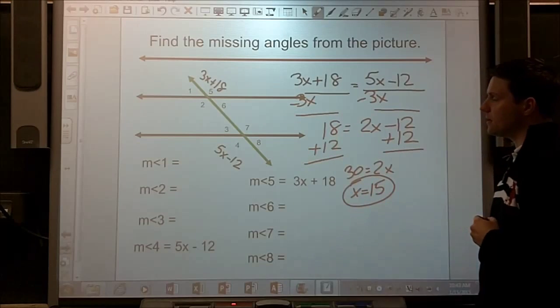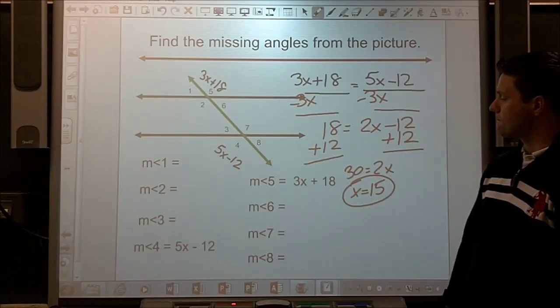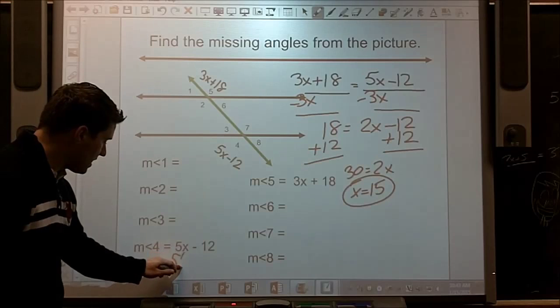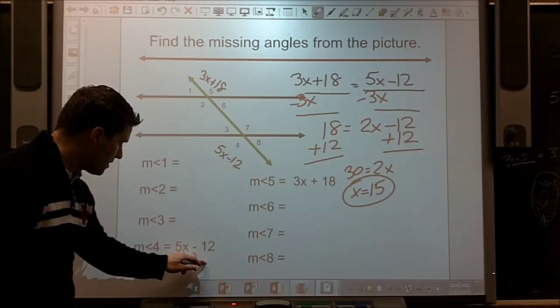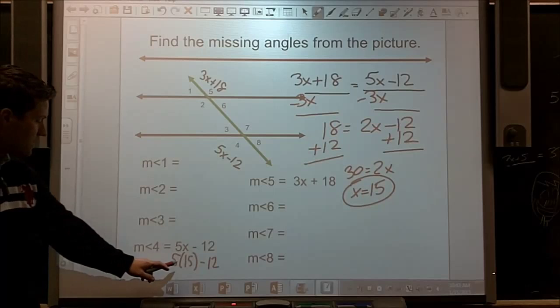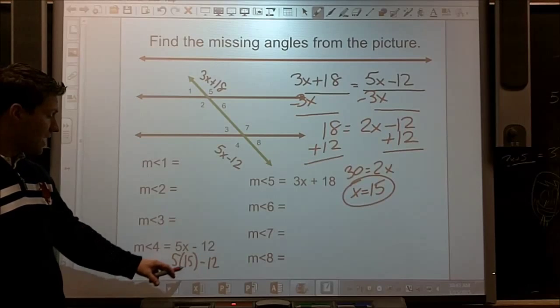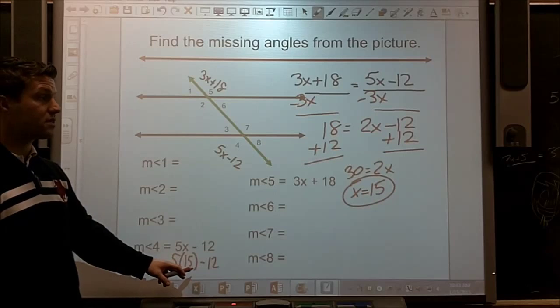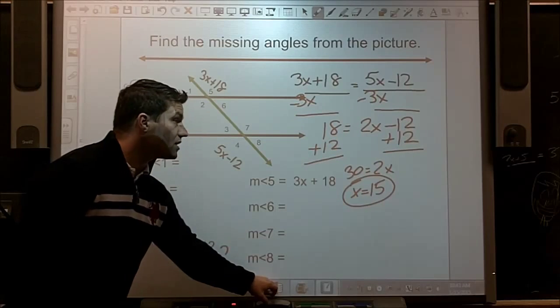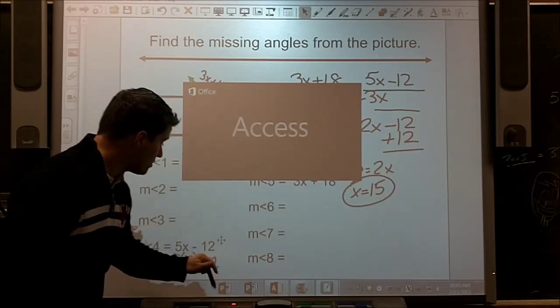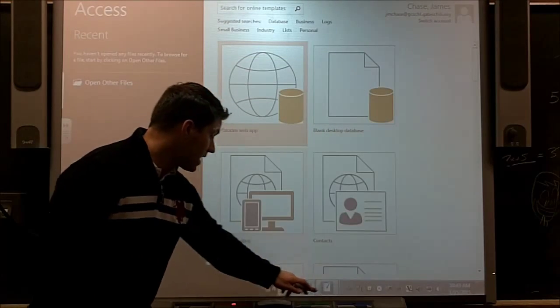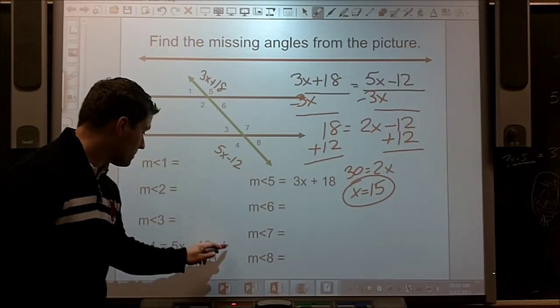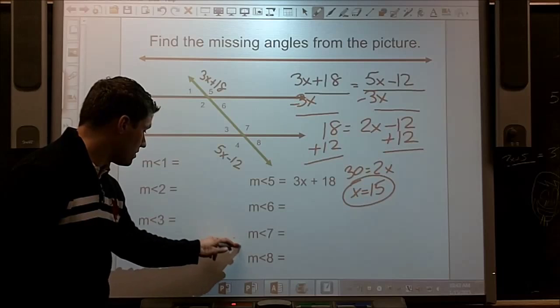All right, x is 15. Only part of the way there. Let's go down here. If 5 times 15 minus 12, if that's going to be angle 4, well, that's 75. 75 minus 10 would be 65. 65 minus 2 more, that means it's going to be 63 degrees. Sorry about that. Let me come back. It's going to be 63 degrees.